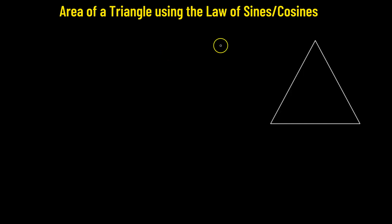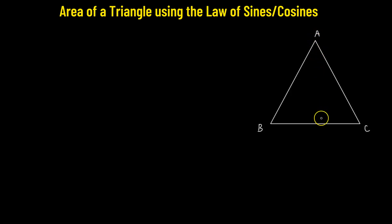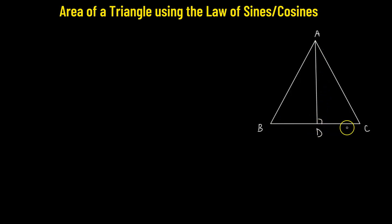Let's find out the area of a triangle. We begin by considering an acute angle triangle with vertices A, B, and C. To find the area of the triangle we need the base, which is BC, and we also need the perpendicular or the altitude of the triangle. To do that, we'll drop a perpendicular from the vertex A to side BC and name it AD. So AD is perpendicular on BC, which immediately gives us two right angle triangles: ADB and ADC.